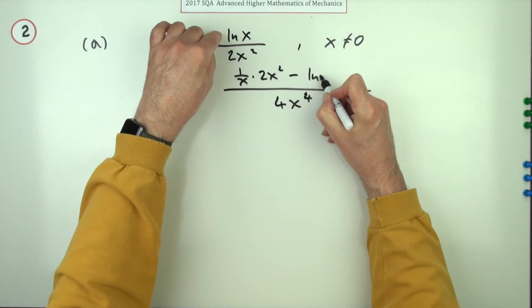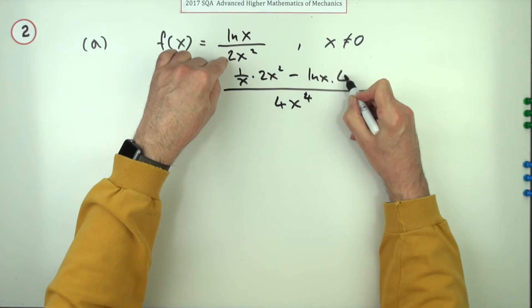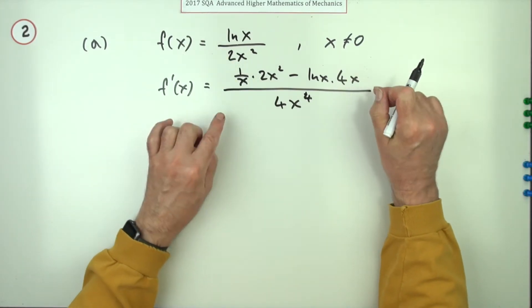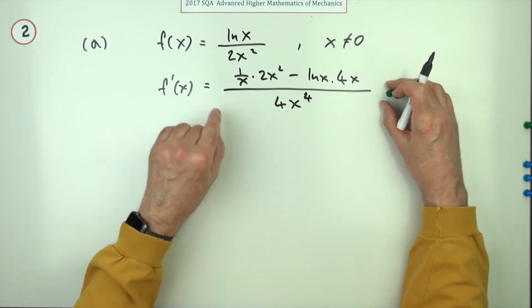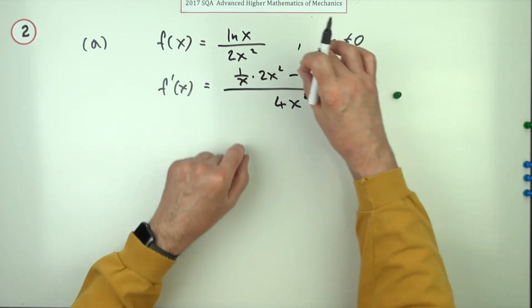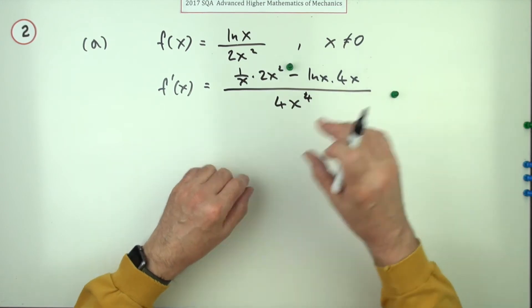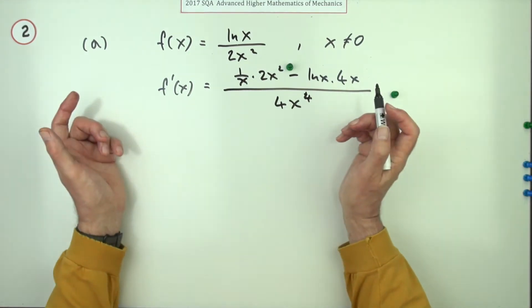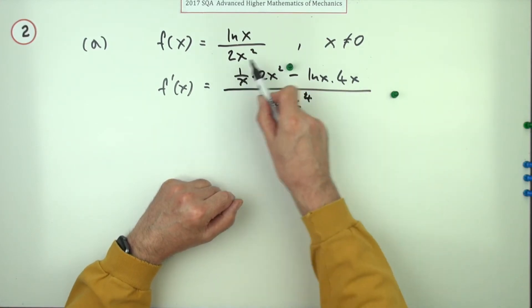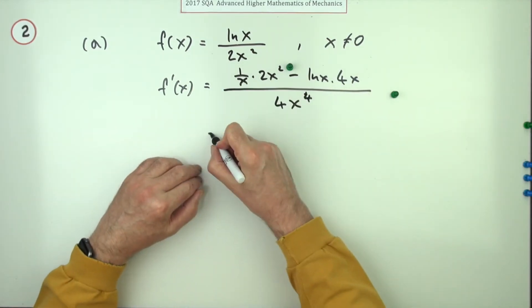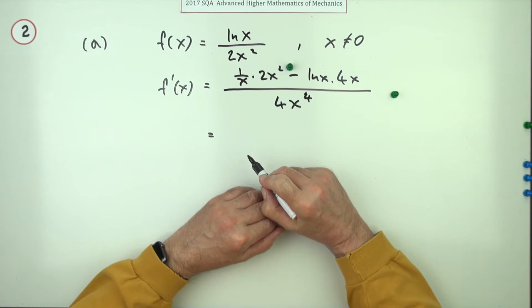Now there's two marks for doing that. They split it up as knowing to use the quotient rule and starting it off, so maybe I'll put it there, and then finishing it off correctly. And the last mark is simplify it because I did say simplify it, so you couldn't just leave it like that. That is correct technically but you're not going to leave it like that.